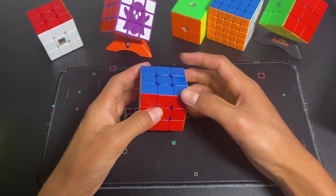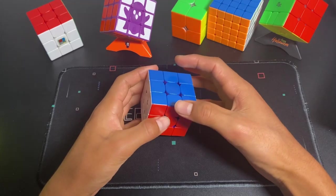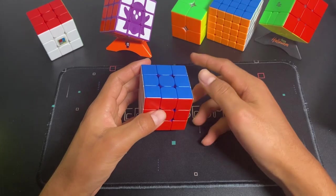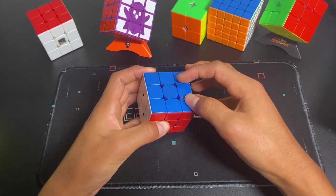The first thing I'm going to teach you is you need to know two main sets of algorithms in order to become an advanced cuber. And that is OLL and PLL.